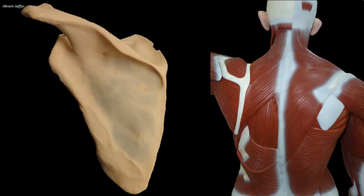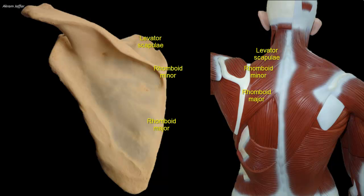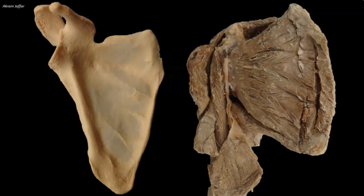The medial border of the scapula gives edge-to-edge attachment to levator scapulae, rhomboid minor, and rhomboid major muscles, all attached to the posterior surface of the medial border. The anterior border of the medial surface provides attachment for the serratus anterior muscle, which passes in front of subscapularis around the thoracic wall to attach to the ribs.